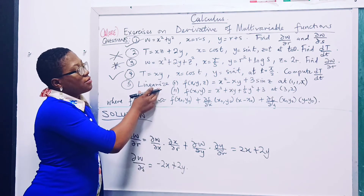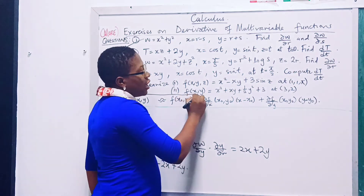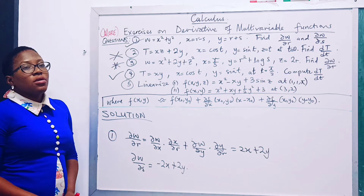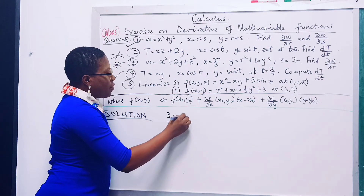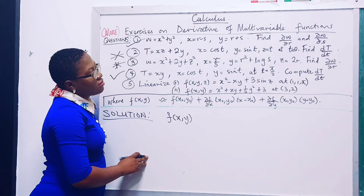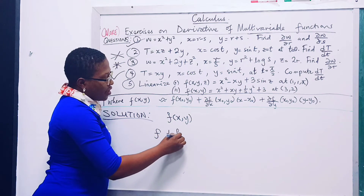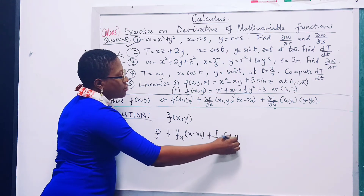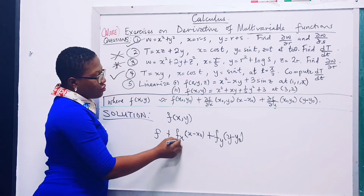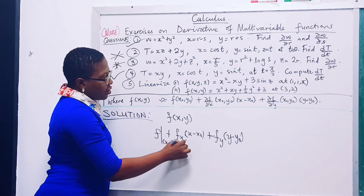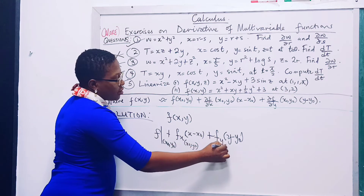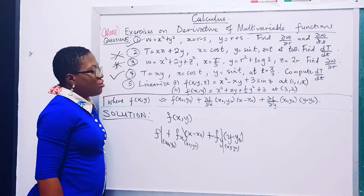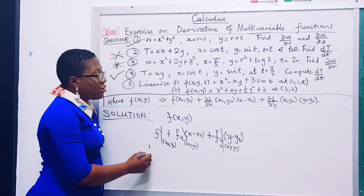Let's try linearization now. We are given the formula. To linearize f(x, y), it is approximately f(x₀, y₀) plus f_x(x₀, y₀)·(x − x₀) plus f_y(x₀, y₀)·(y − y₀). The aim of linearization is to make every term have a power of one — the highest power should be one.